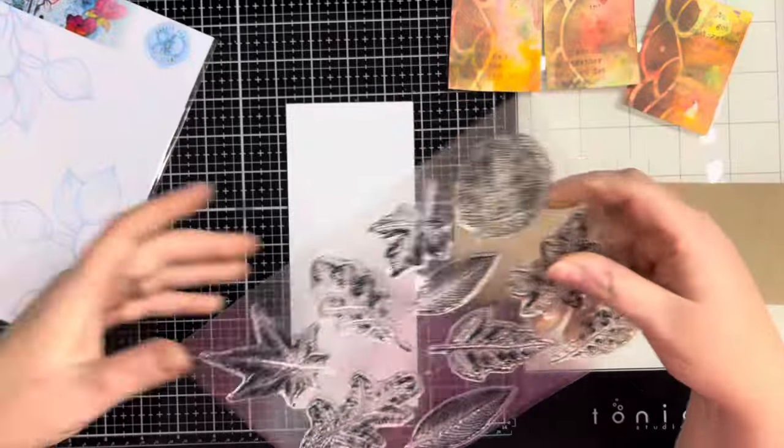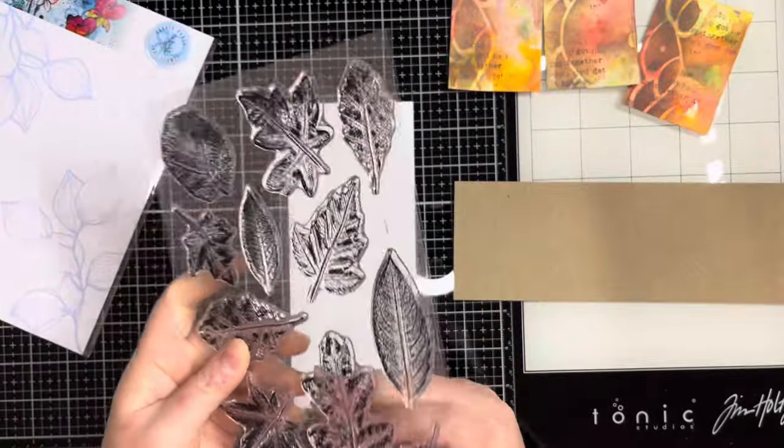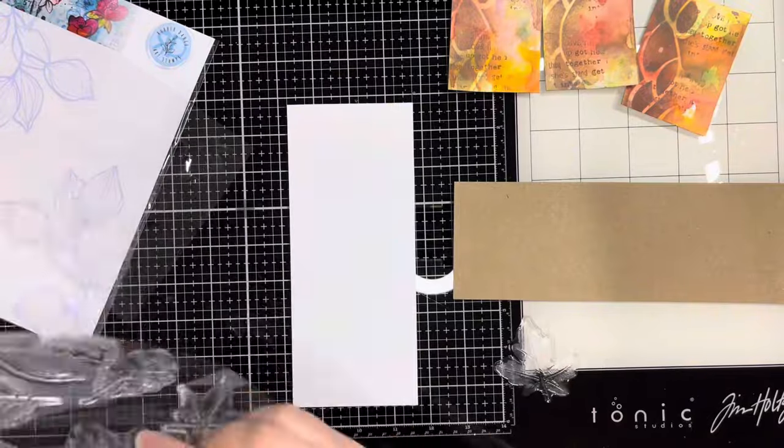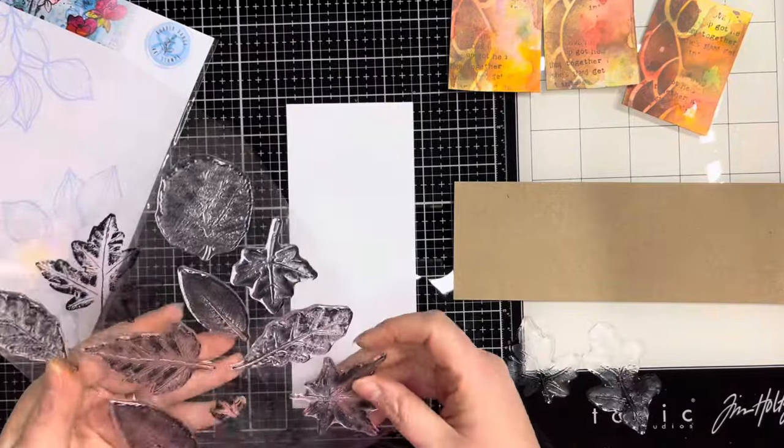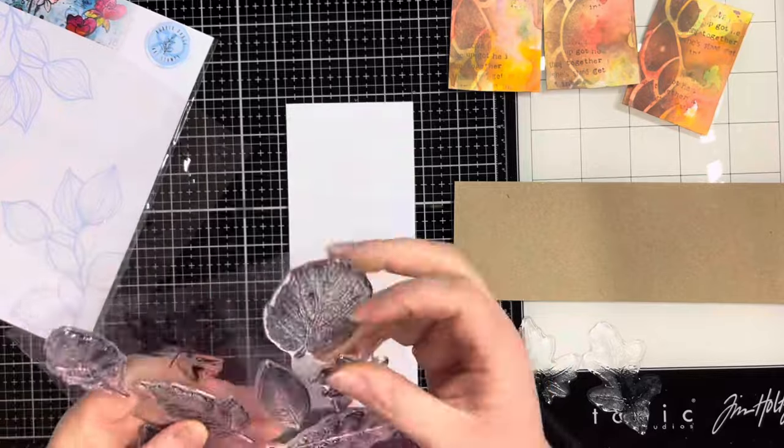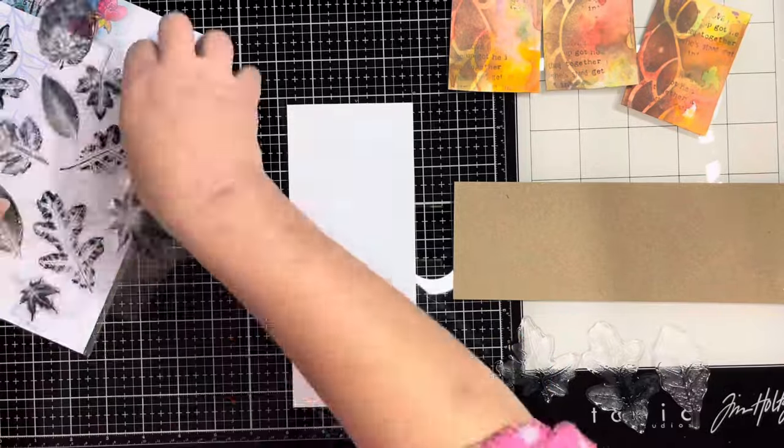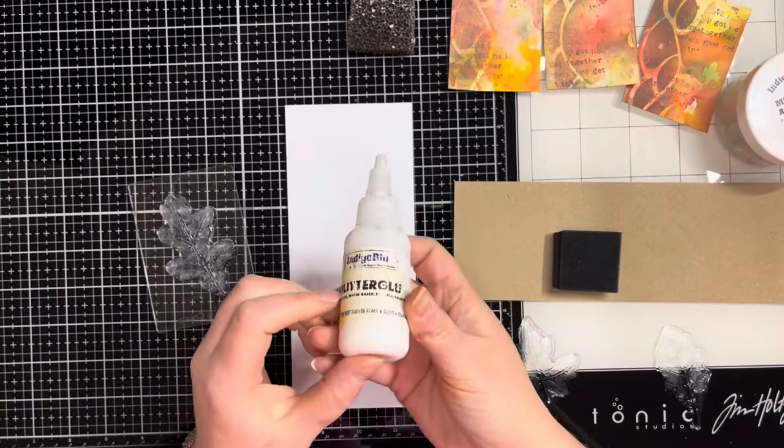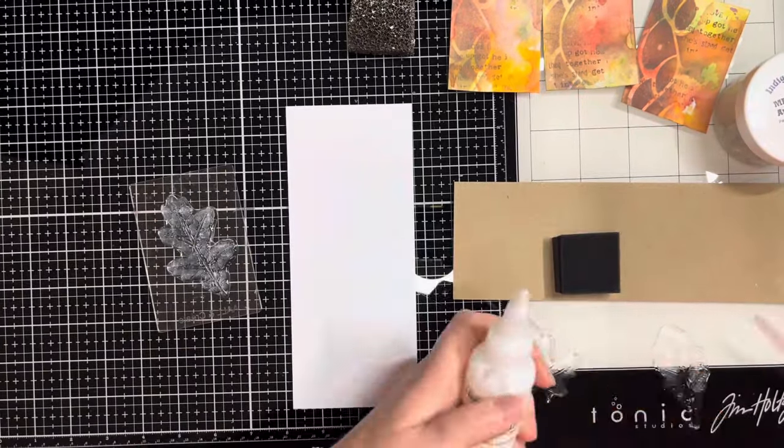My focal elements are these Autumn Leaves stamps from Rubberdance that are absolutely gorgeous. I've got a piece of white cardstock and a piece of craft cardstock because I'm not really sure which one's going to look more effective and work well with the backgrounds I've created. We're going to stamp on both and see which one looks better at the end.